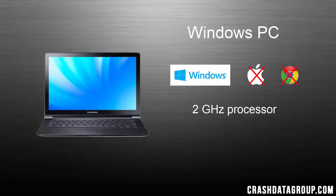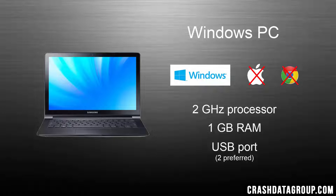You'll need a minimum 2 GHz processor and a minimum 1 GB of RAM. Having two USB ports is ideal for the software installation, but you can easily get by if you only have one. If your PC only has one USB port, start the installation with the USB dongle and swap it out with the VCI USB cable when prompted to connect to the VCI.